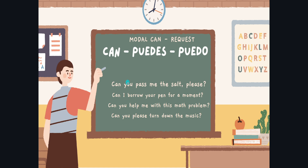Cuando nosotros intentamos pedir algo a alguien, comenzamos con 'puedo' o 'puedes'. Puedes prestarme... puedo tomar este lápiz. A eso se le denomina REQUEST — peticiones. Aquí tenemos cuatro oraciones, todas en pregunta. Cuando utilizamos REQUEST, son peticiones, y las peticiones comúnmente las hacemos en pregunta. Ubicamos el modal CAN al inicio de la oración: Can you? Can I? Utilizamos verbos en presente. Por ejemplo: 'Can you pass me the salt, please?' — ¿Puedes pasarme la sal, por favor? Eso es un REQUEST — estás pidiendo a alguien que haga algo por ti.